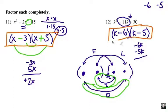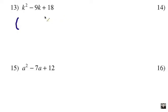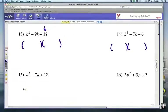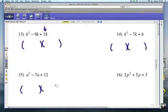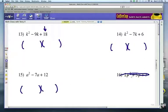Now I'm going to flip the page — hit pause and try the problems on your own. Make your parentheses for your binomials, then look at the factors of the third term and try out different combinations. Go ahead and hit pause and give these a try. Ignore number 16; we'll deal with that in our next video.